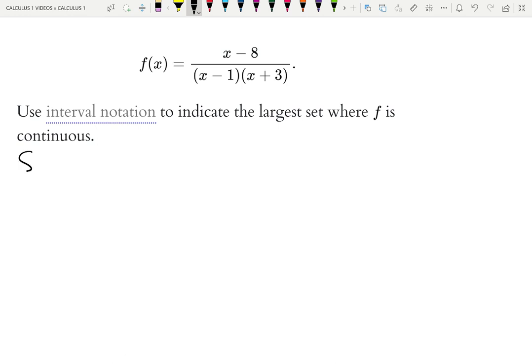Let's first figure out where f is not continuous. As you can guess, let's see when the denominator hits zero, so that we don't have division by zero. The denominator is zero when x minus 1 is zero, or when x plus 3 is zero. That is when x is 1 and x is minus 3.